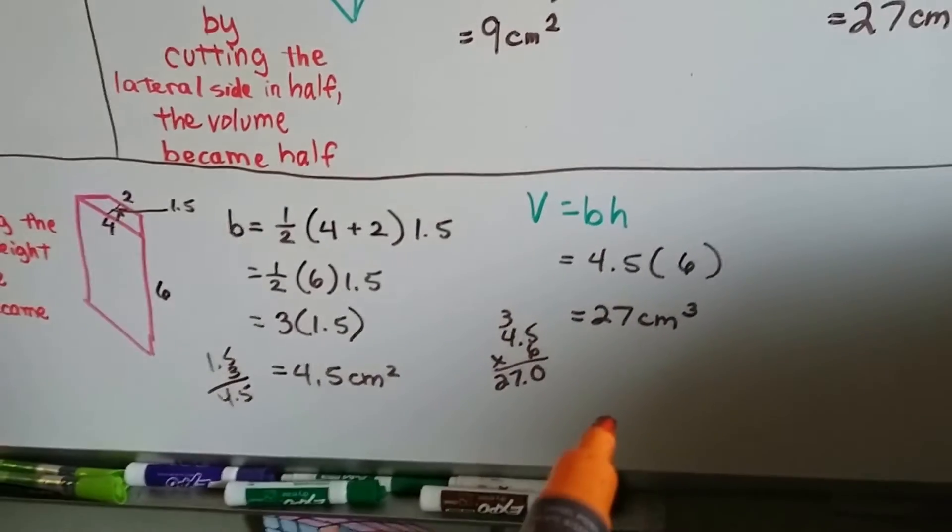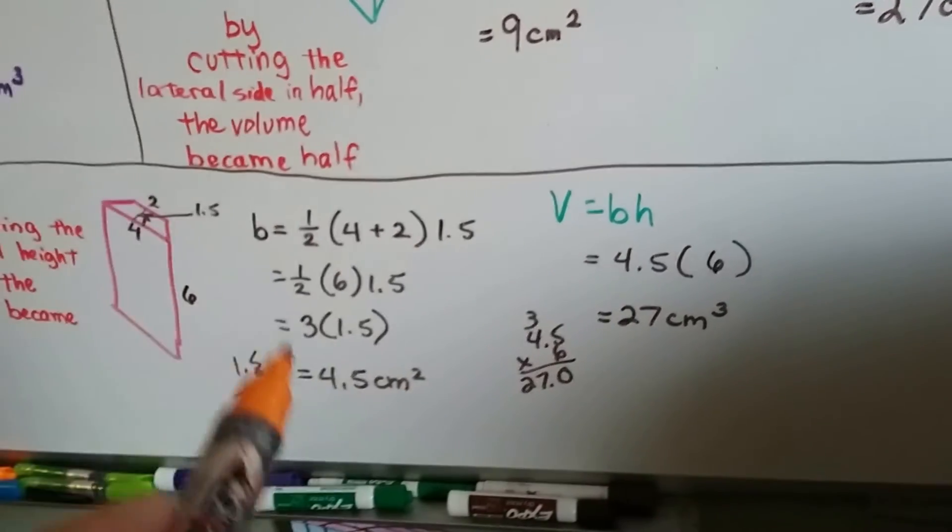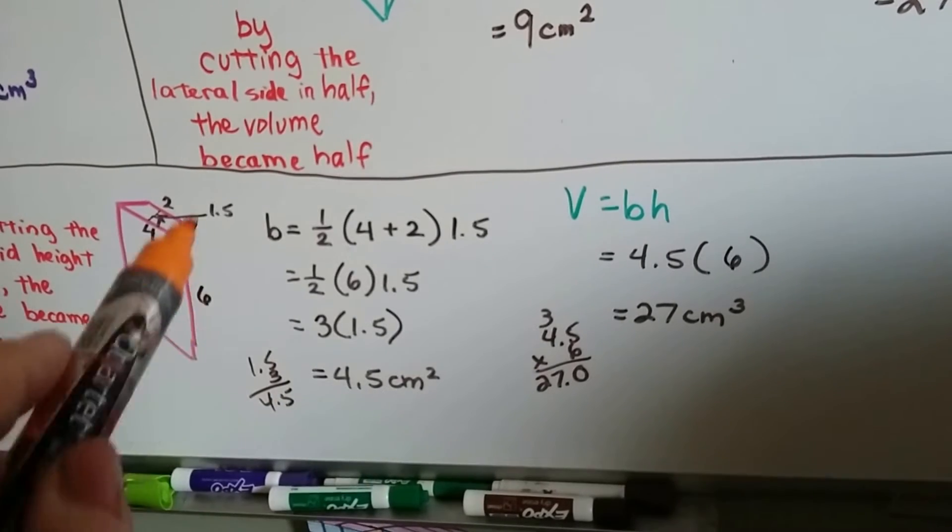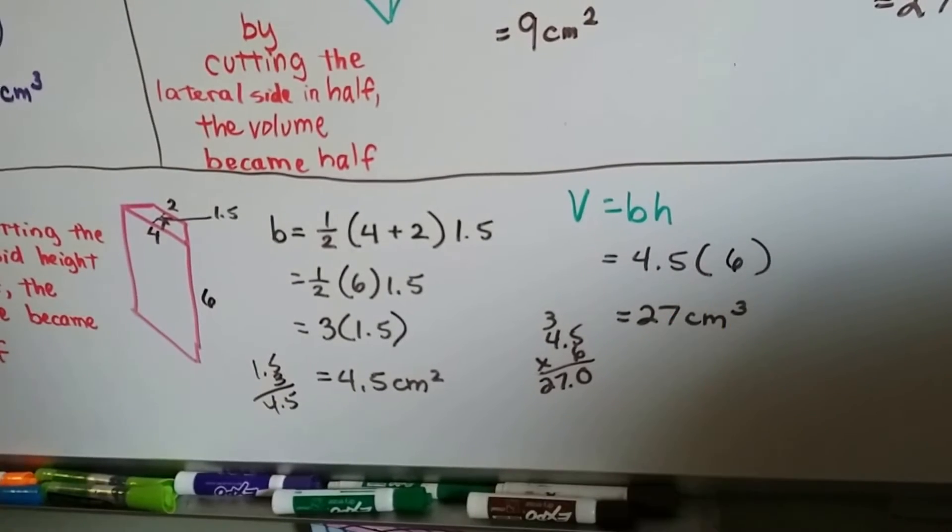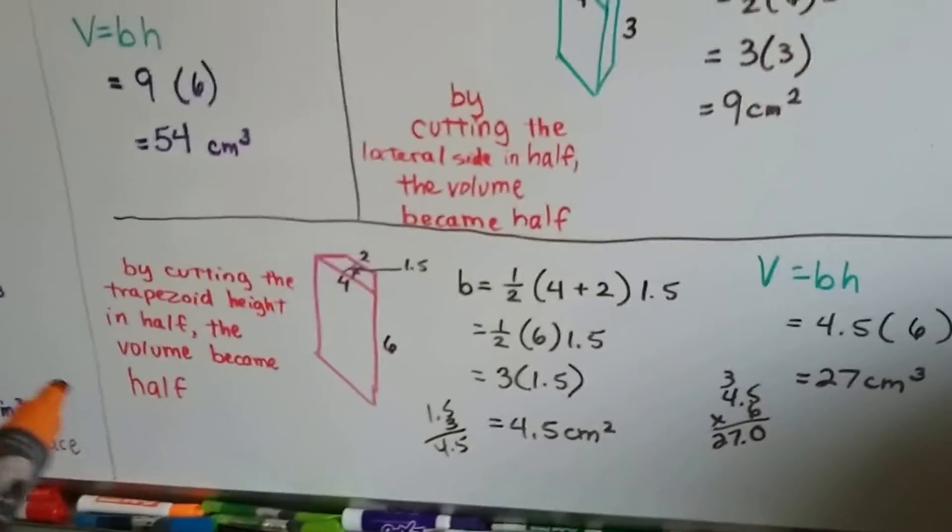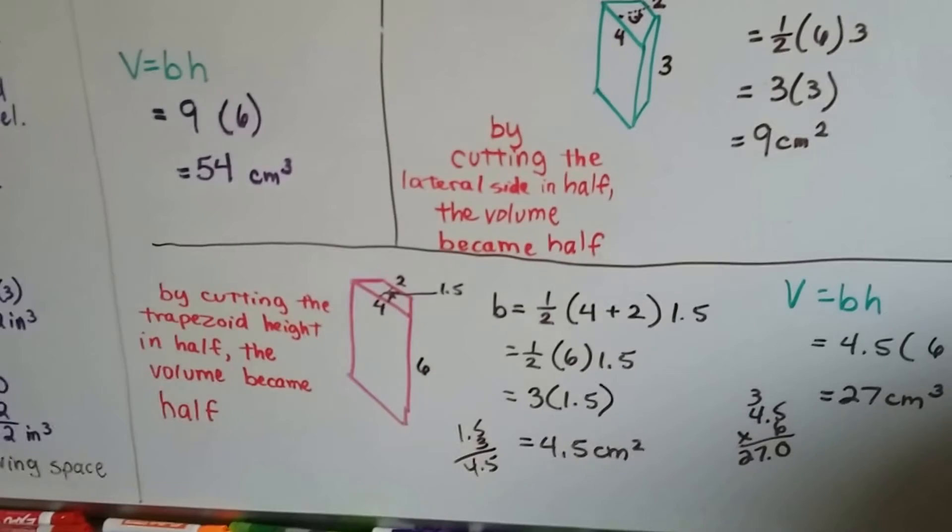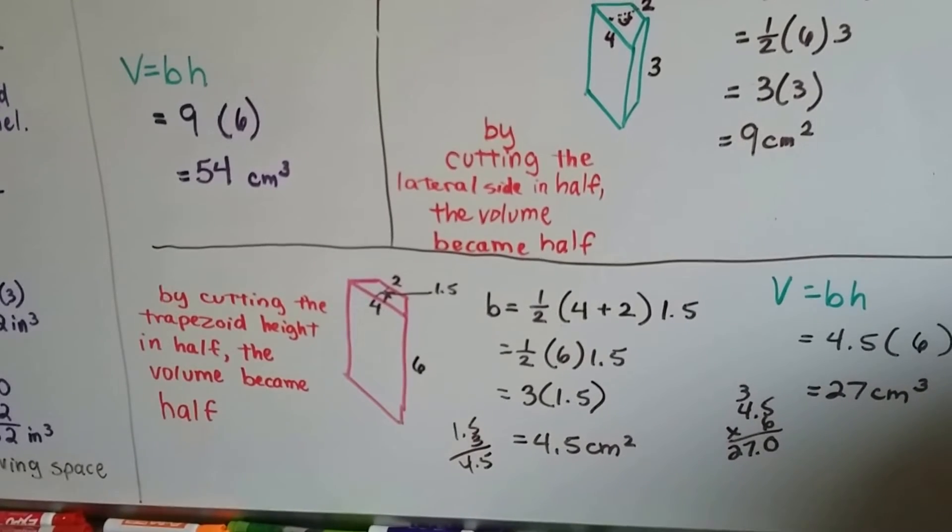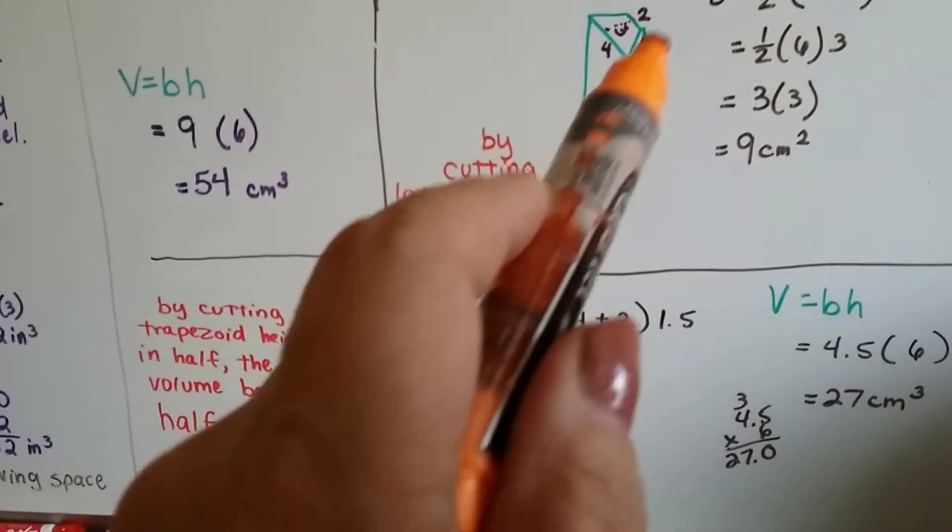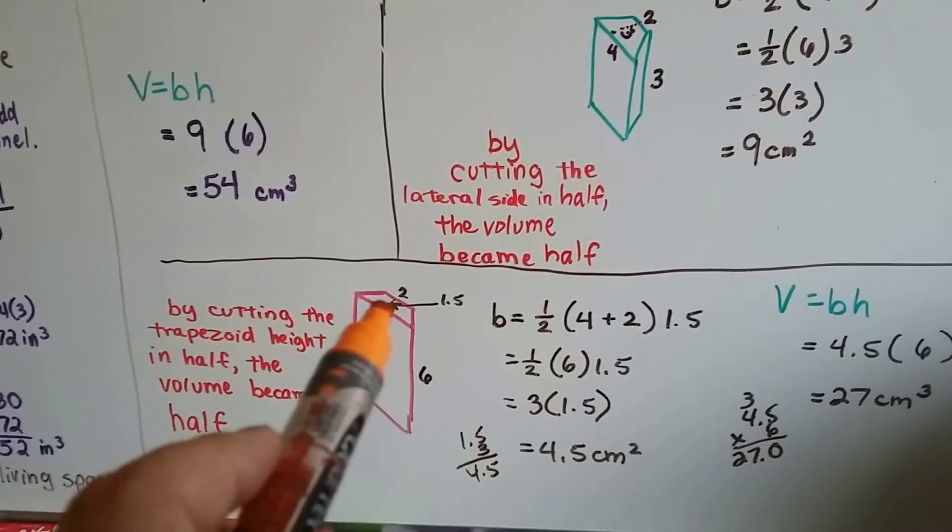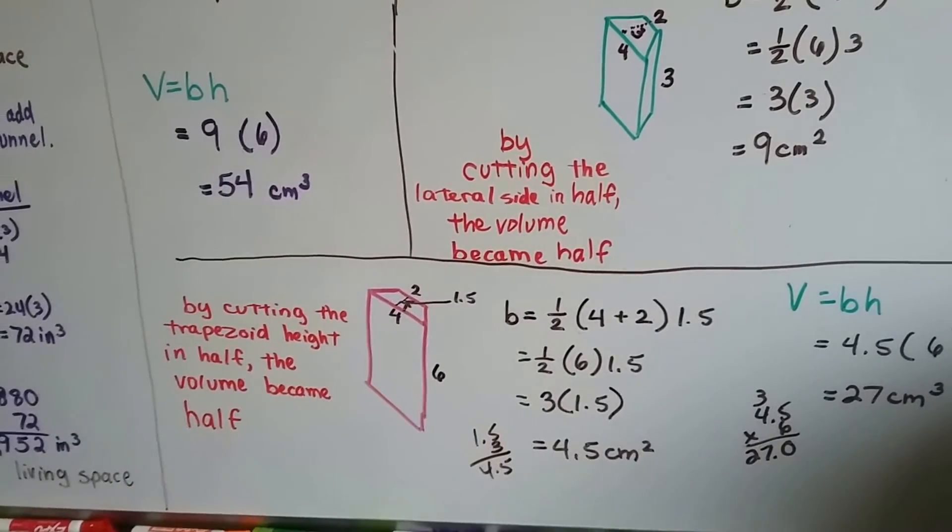Now we can do the base times the height. And 4.5, what we got for the base, times this 6 lateral side height is 27 cubic centimeters. So, by cutting that height here in half, we cut the volume in half. By cutting the lateral side height in half, or by cutting the trapezoid's height in half, we got half the volume.